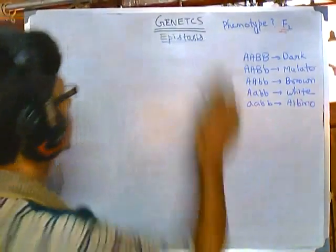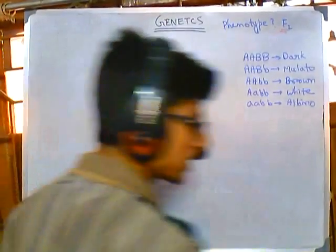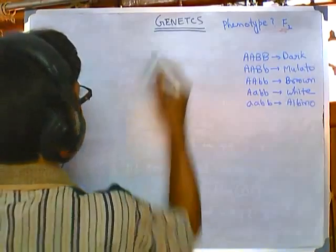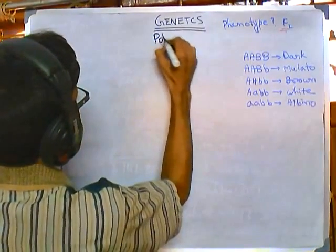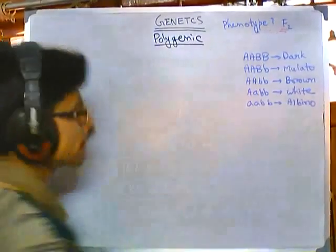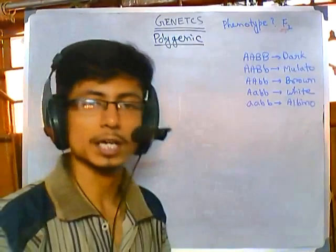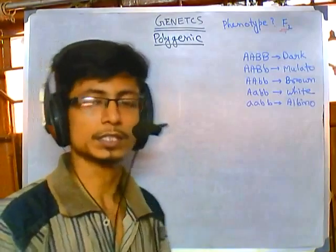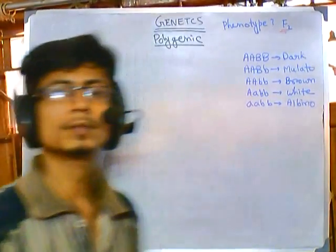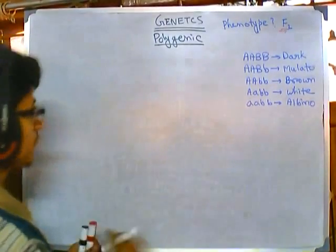Welcome back friends. We are dealing with problems of genetics. We have talked about many different types of problems, but now this problem is going to be interesting because we will be talking about polygenic problems. Polygene means many genes. Most of the problems we have discussed so far are controlled by one gene, but in this case we will be seeing problems controlled by many genes.